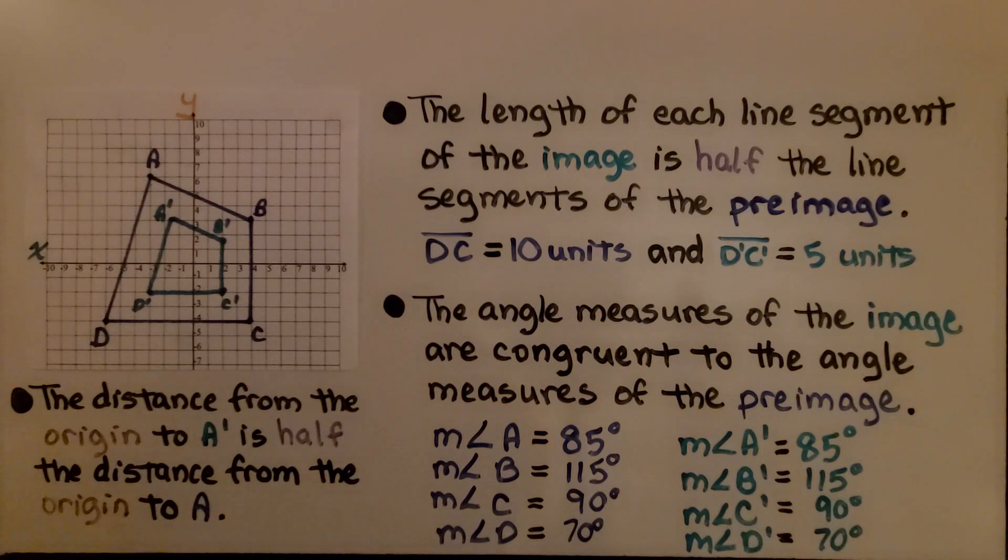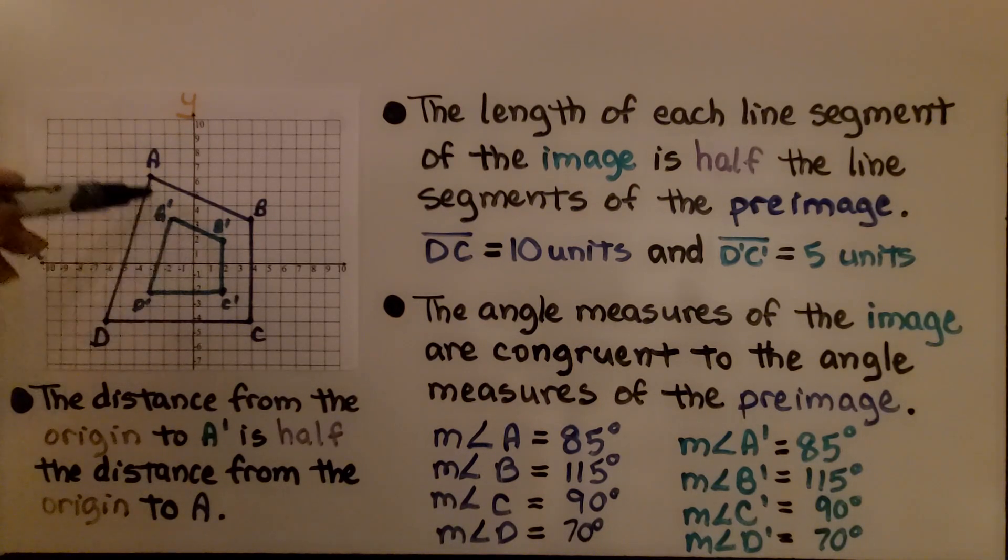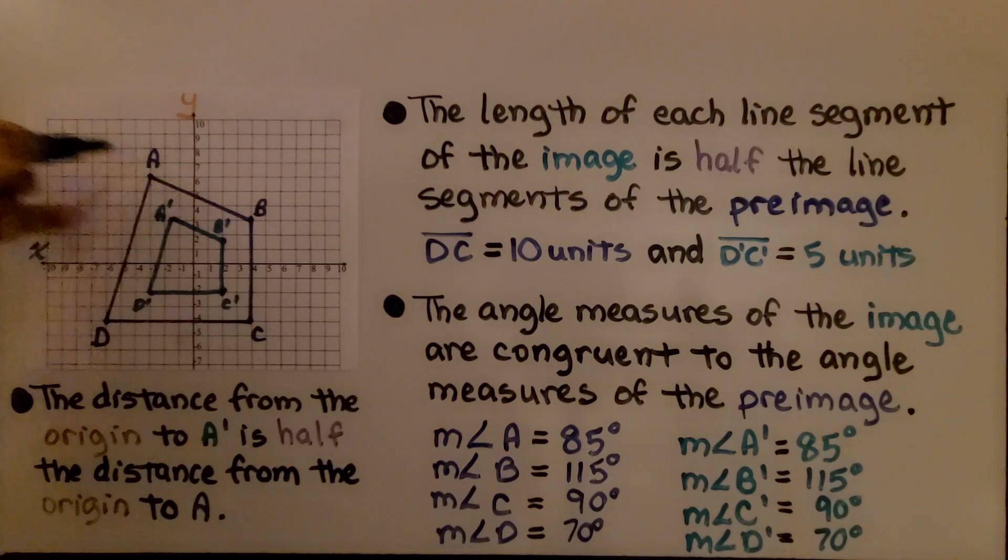The distance from the origin to A prime is half the distance from the origin to A. This point right here is half the distance from the origin than it is from the origin to A.